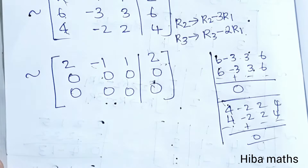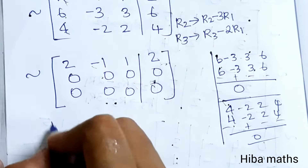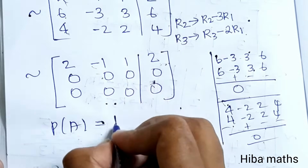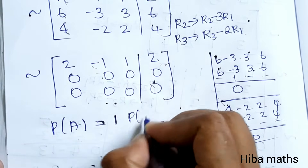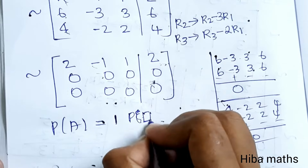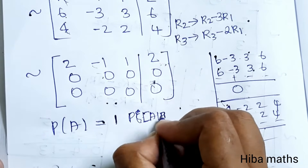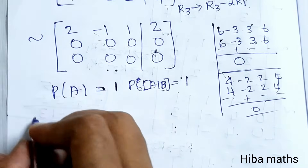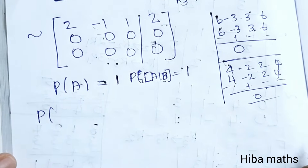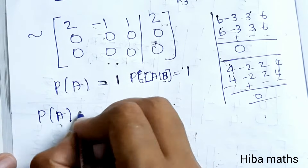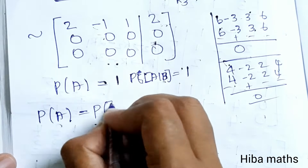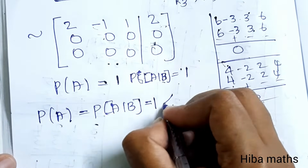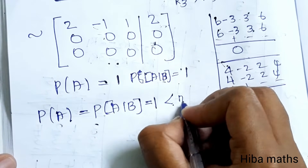The matrix is now in echelon form. The rank of A equals 1, as there is one non-zero row. The rank of the augmented matrix is also 1, as there is one non-zero row. Therefore, rank of A equals rank of augmented matrix equals 1, which is less than n equals 3 unknowns.